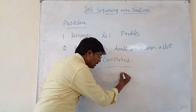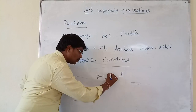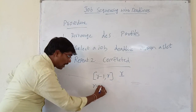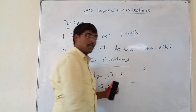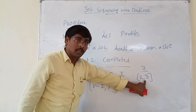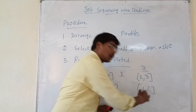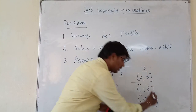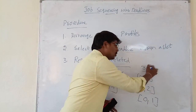For a job with deadline r, first we are allocated slot (r-1, r). If it is not available, then move to slot (r-2, r-1). For example, if deadline equals 3, first prefer slot (2, 3). If slot (2, 3) is already allocated, move to slot (1, 2). If slot (1, 2) is also already allocated, move to slot (0, 1). If slot (0, 1) is also already allocated, simply ignore the job.